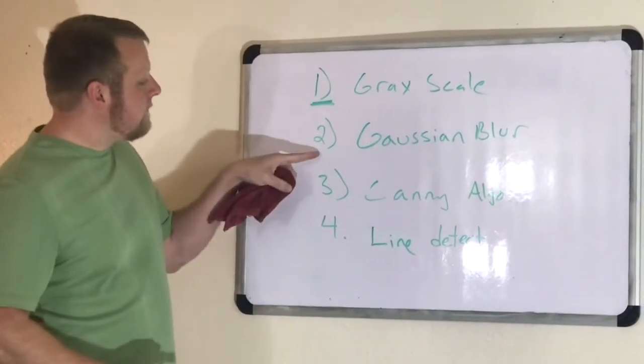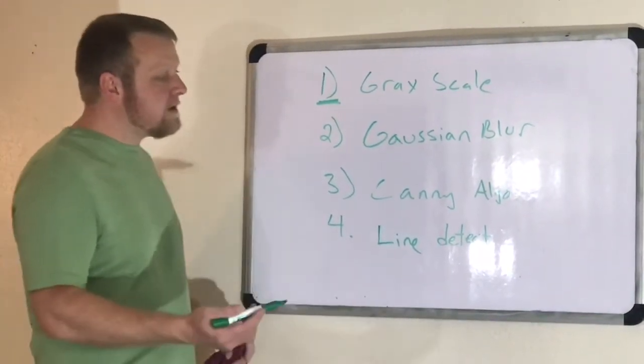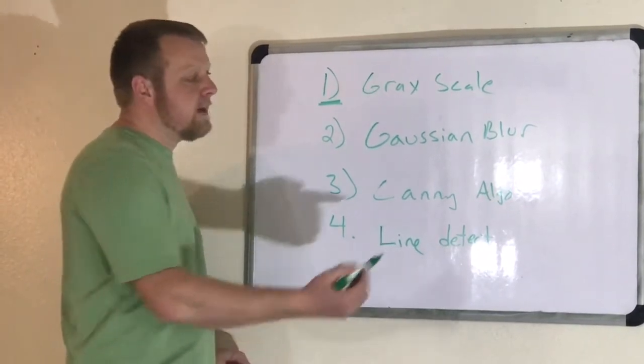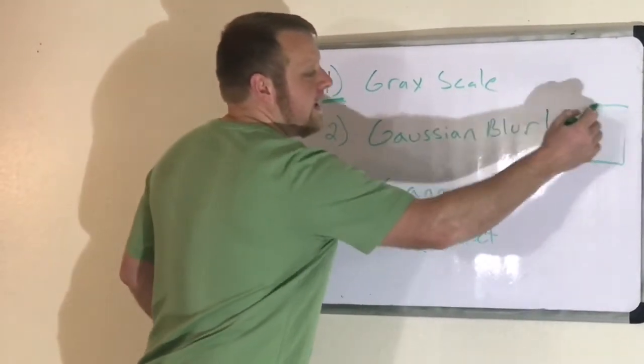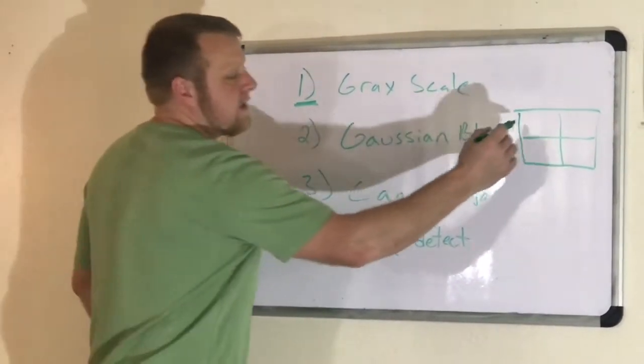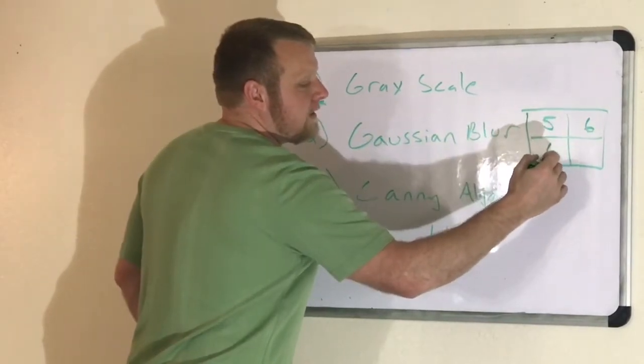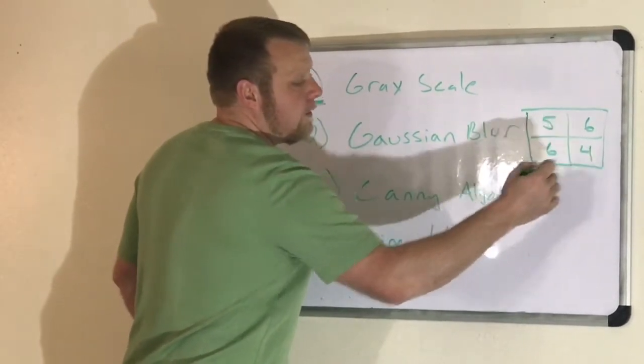The next thing you want to do is apply this thing called the Gaussian blur. Now the Gaussian blur is nothing more than taking a set of pixels that are next to each other. If you have a grid of pixels, whatever type of blur you want, you can apply this. And let's say your pixel densities are 5, 6, 6, and 4 or whatnot.